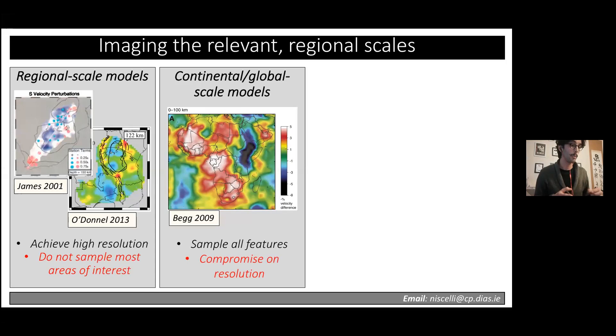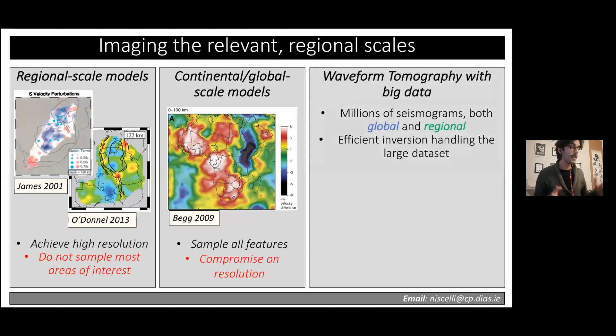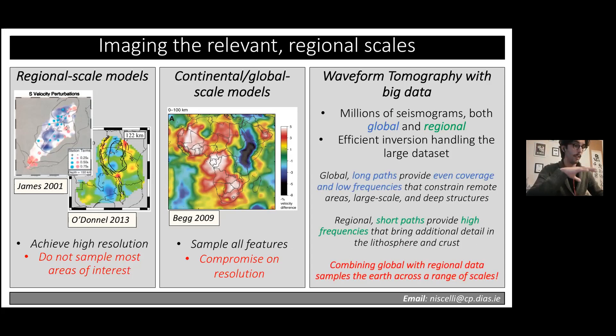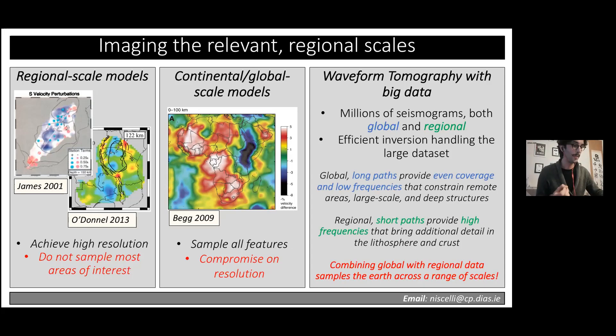The way we approach this is by using waveform tomography with big data, meaning we use millions of seismograms, both global and regional, fed into an efficient inversion scheme capable of handling this large dataset. The global and long paths provide uneven coverage that is extremely important in Africa, contributing low frequencies to constrain remote areas and large-scale deep structure, while regional short paths provide high-frequency detail for interpreting fine-scale anomaly distribution.